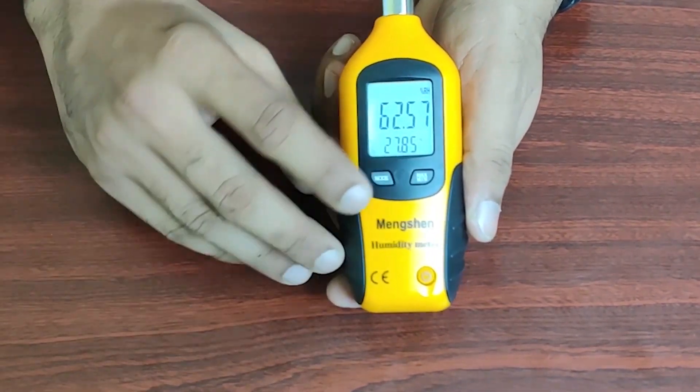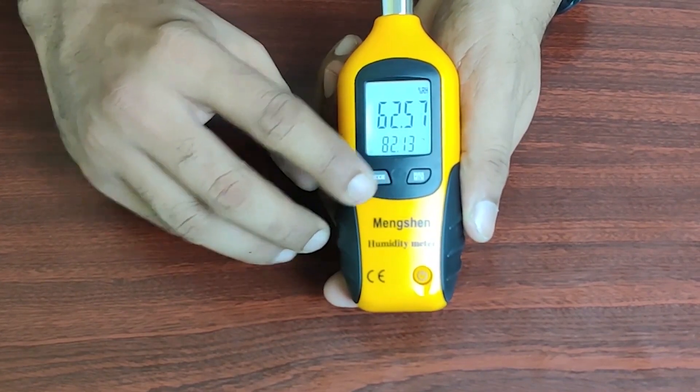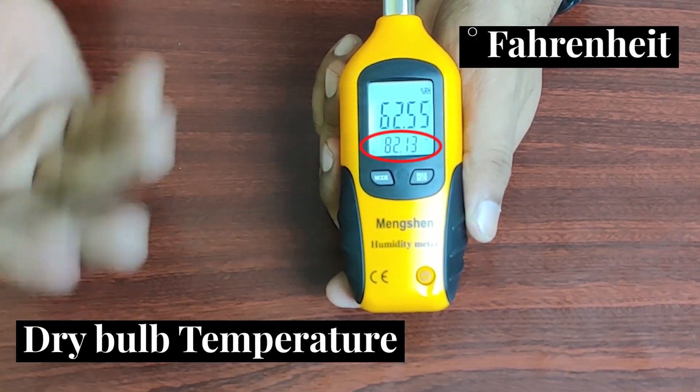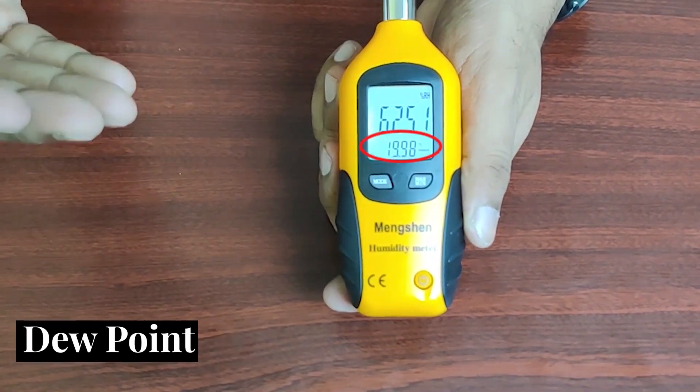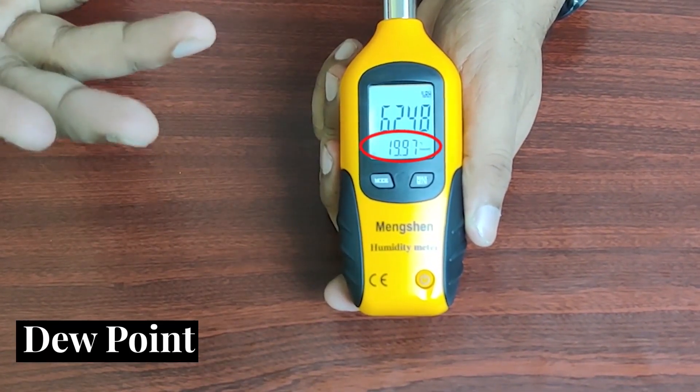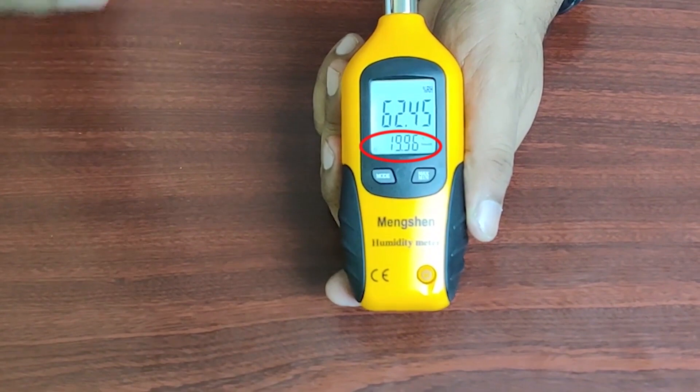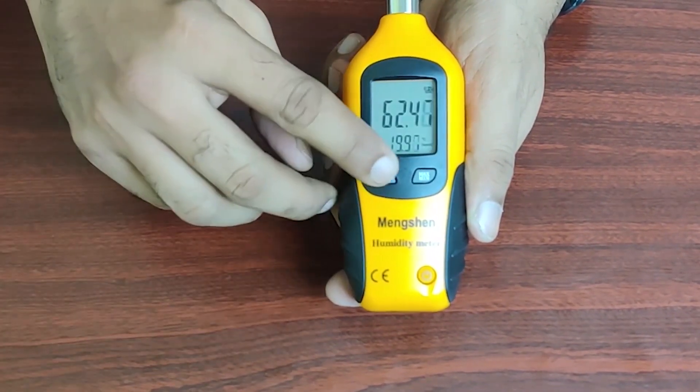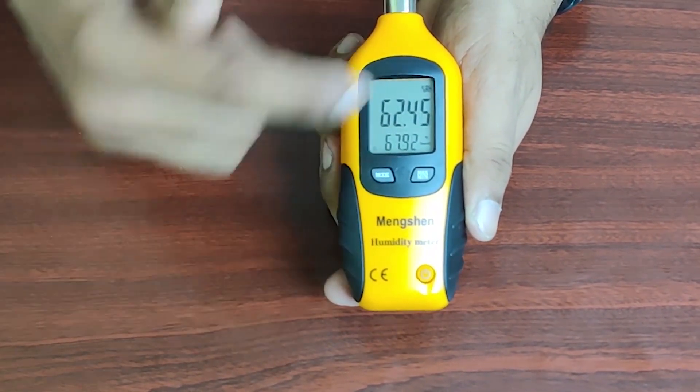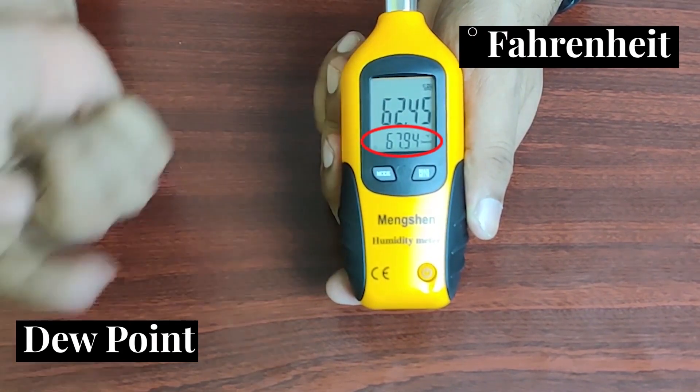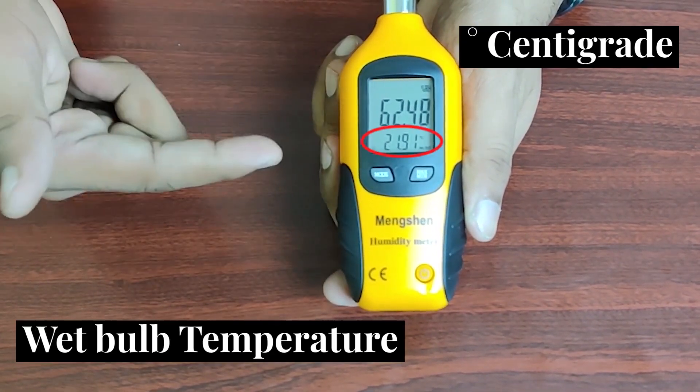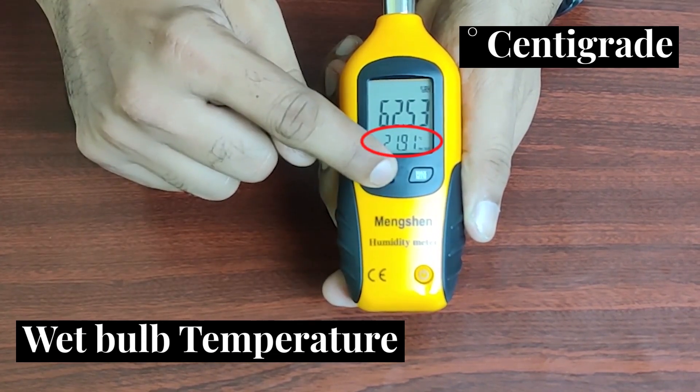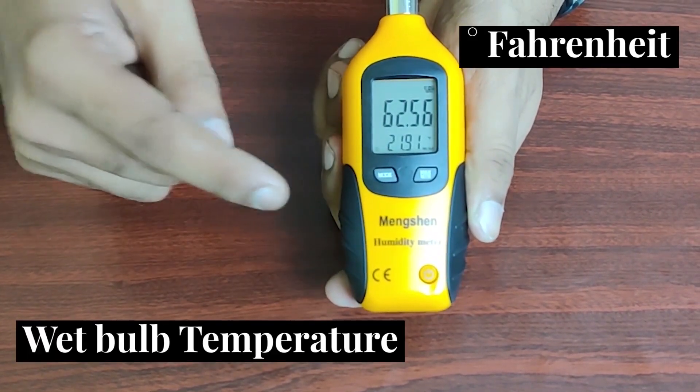The moment you press the mode, you'll see the same temperature in Fahrenheit. Next, if you press mode again, you'll see the dew point temperature. Dew point is the temperature at which vapor condenses into liquid state. Again, that will be the Fahrenheit version of the dew point temperature. Press again, you'll have your wet bulb temperature in degrees Celsius and the Fahrenheit. Pressing mode again brings you back to the original ambient temperature in Celsius.